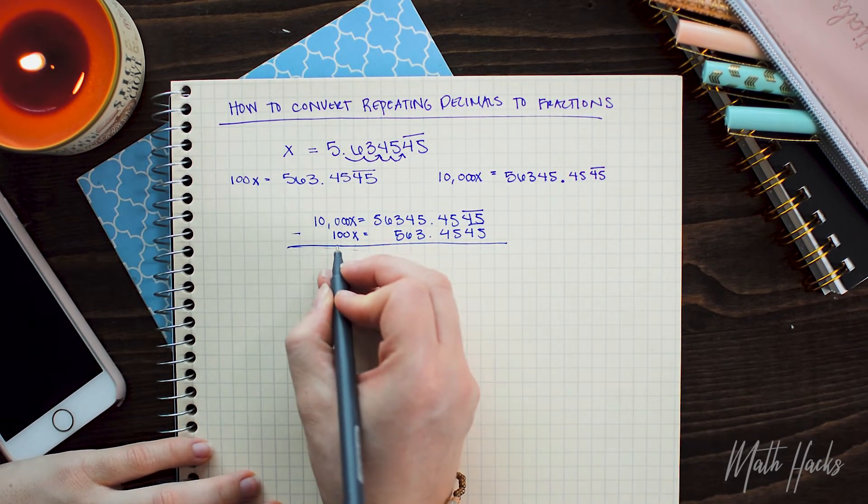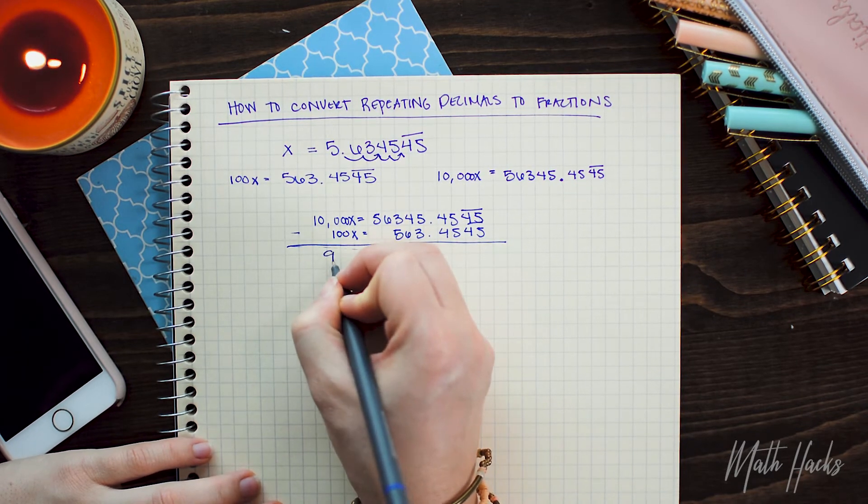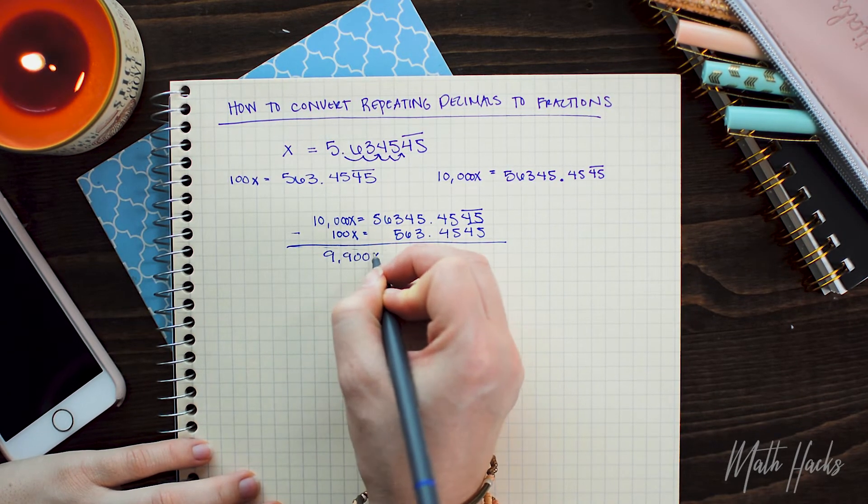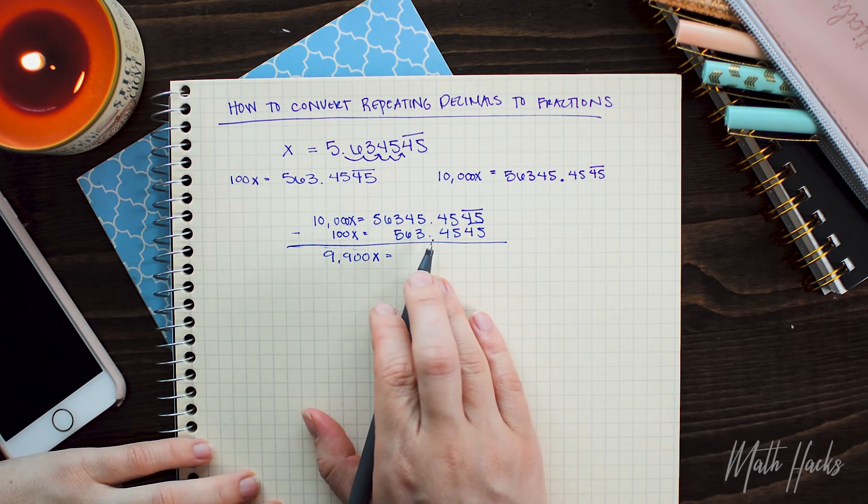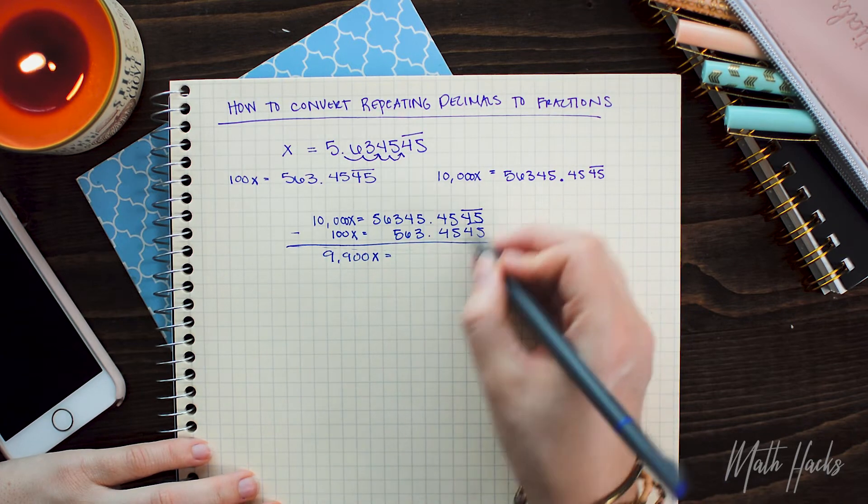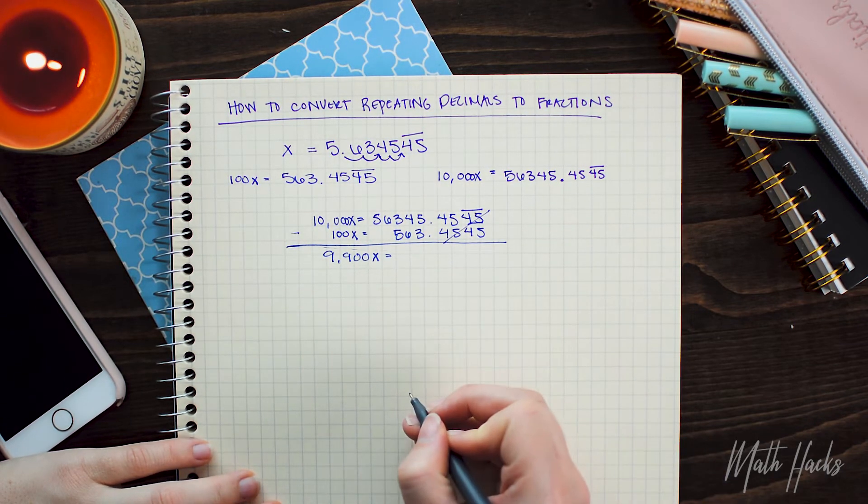So 10,000x minus 100x is 9,900x. And on the right here, I'm just going to do some basic subtraction. The decimal here, these are going to cancel out.